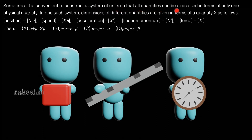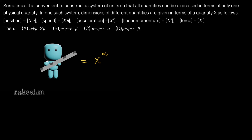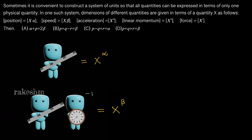Sometimes it is convenient to construct a system of units so that all quantities can be expressed in terms of only one physical quantity. In one such system, dimensions of different quantities are given in terms of a quantity x as follows: position equals x power alpha, where position has dimensions of length L. Next, speed equals x power beta, where speed is meters per second or L T power minus one.